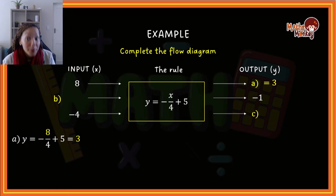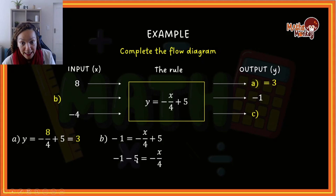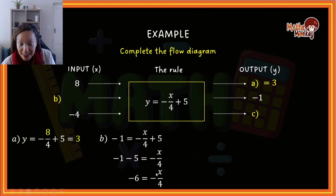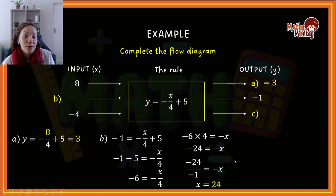Now let's calculate b. B is an input, so we use the equation method. Write down the formula and where I see y, put negative 1. Now solve for x: move the 5 over — it becomes negative — giving negative 6 equals negative x over 4. Take the 4 over by multiplying: negative 6 times 4 gives negative 24. Then divide by negative 1 to get x alone, so x equals 24. In our flow diagram, b equals 24.